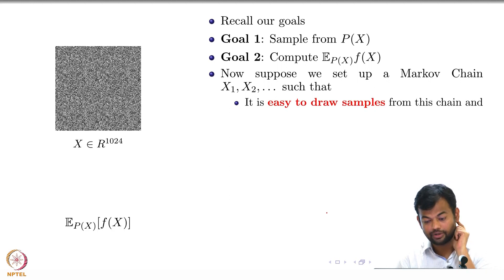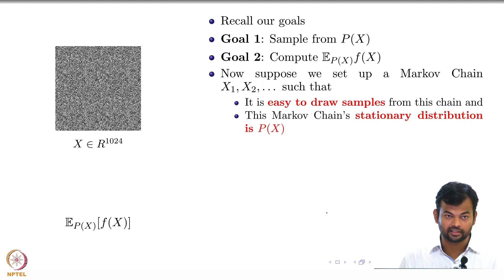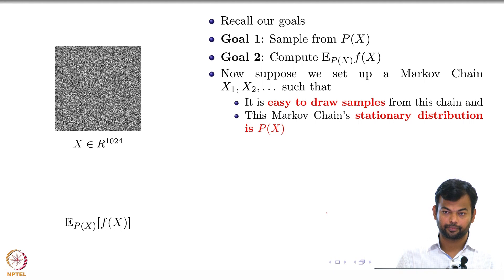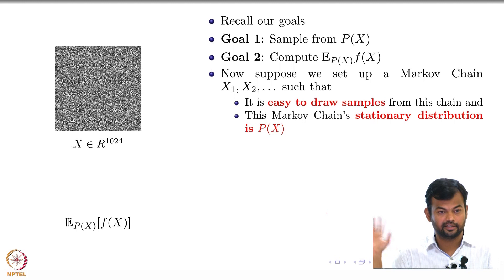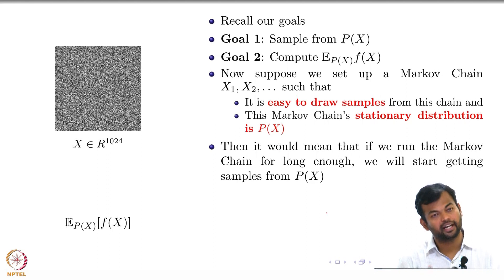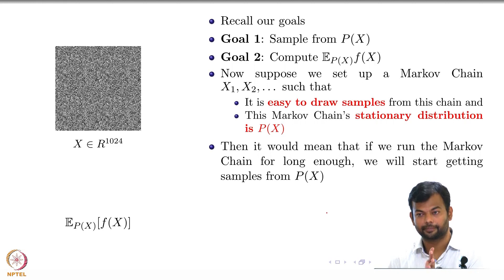So I should be able to set up a Markov chain such that it is easy to draw samples from that chain and the stationary distribution of this chain is the distribution that I care about, P of X. Because it is easy to draw from this chain, once I reach pi and start drawing samples from there, it would be easy to draw samples from the distribution that I care about. The goal makes sense, even if it is not yet clear how to achieve it.